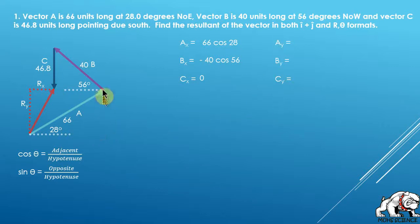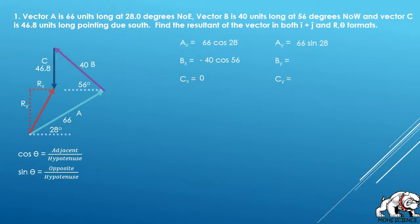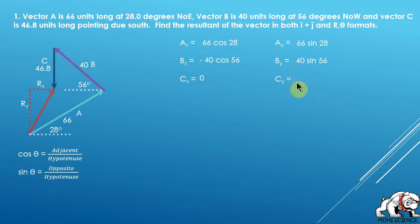For the y directions: Ay is the vertical component, opposite the 28-degree angle, so we use sine. Ay equals the hypotenuse times sine of 28 — it's positive because we're going up. Similarly, By is going up in the y direction, opposite the 56 degrees, so By equals 40 × sin(56), also positive. Vector C is all downward, so Cy is simply negative 46.8 — put the negative sign in because it's going down.